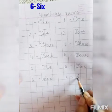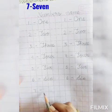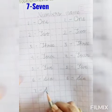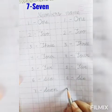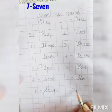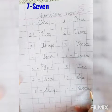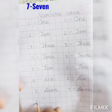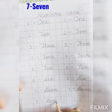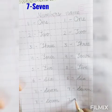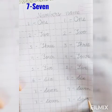Number 7 s-e-v-e-n, 7. Again, number 7 s-e-v-e-n, 7. Repeat, number 7 s-e-v-e-n, 7.